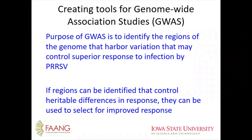A little bit about GWAS, because I know this is not a strongly genetic group — more of an immunology group. The purpose of GWAS is to try to identify the regions of the genome that harbor variation that might control superior responses to infection. So we're interested in a genetic approach. If regions can be identified that control heritable differences in response, those could be used to select for improved responses.